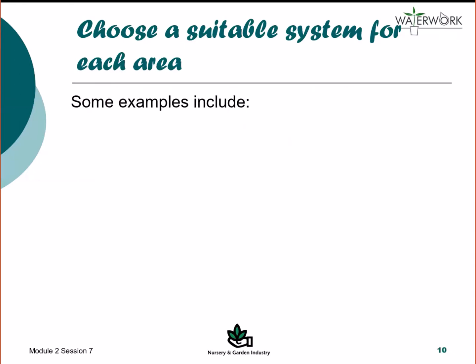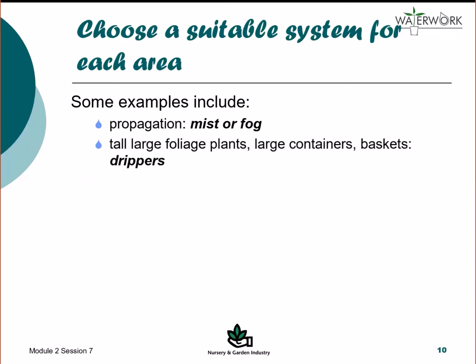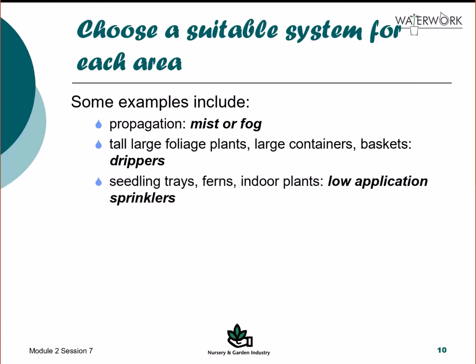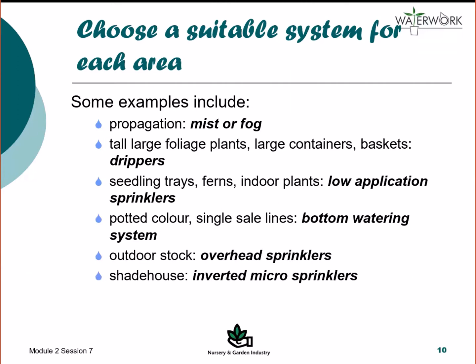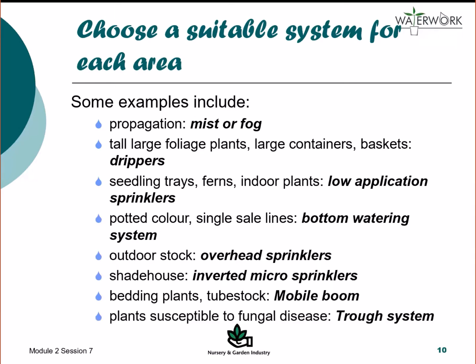Some examples of irrigation system types and where they can be used: misting or fog systems with separate controls for propagation areas; drippers for tall or large foliage plants, large containers, hanging baskets, flowering plants or plants susceptible to fungal diseases; low application rate sprinklers with fine droplet sizes for seedling trays, ferns and indoor plants with possible thermostatic control for cooling and humidification; capillary matting or ebb and flow systems for potted colour and single sail lines; overhead irrigation for outdoor stock; inverted micro sprinklers in shade houses; mobile booms for bedding plants, seedlings and tube stock; and trough systems for plants susceptible to fungal diseases.